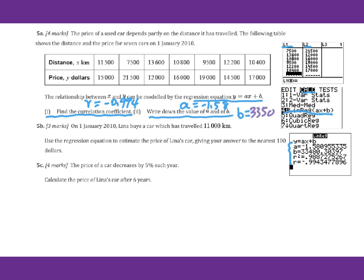For 5b, on 1st January 2010, Lina buys a car which has traveled 11,000 km. Use this regression equation to estimate the price. So we have y equals negative 1.58 times 11,000 plus 33,500. So we plug in y equals 16,000 dollars.